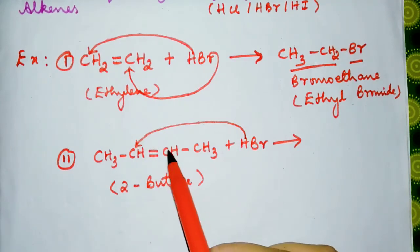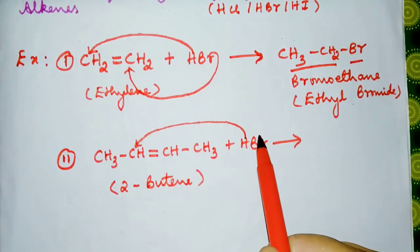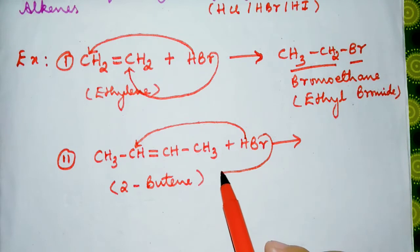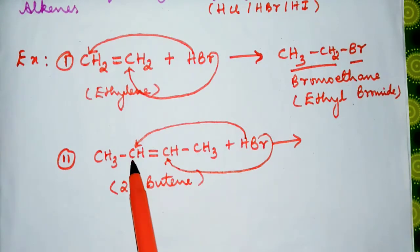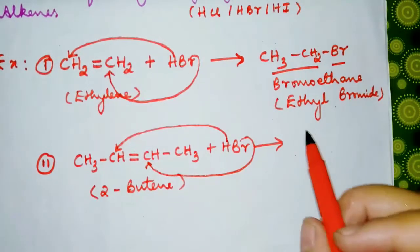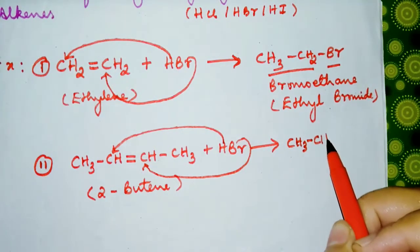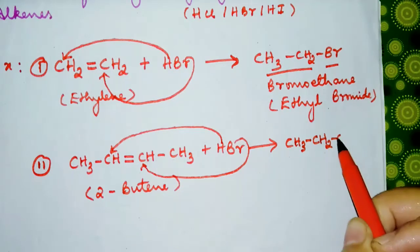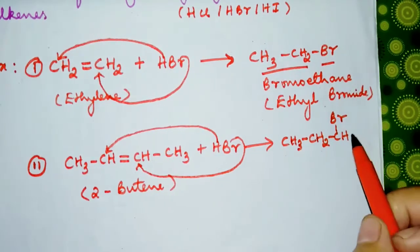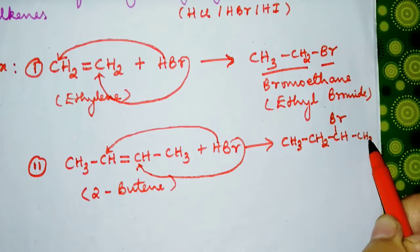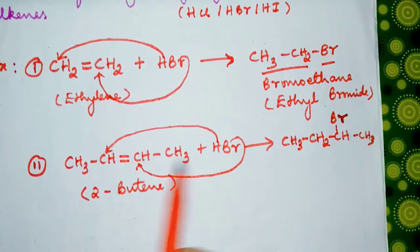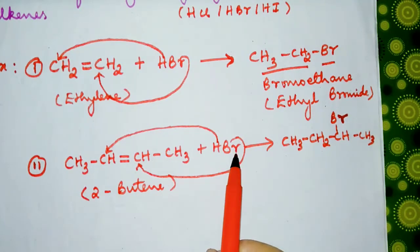In the case of symmetrical alkenes, this hydrogen can attack this carbon or this one, and the bromide ion can attack this one or this one. So you get CH3-CH2-CHBr-CH3 when your hydrogen attacks this one and Br attacks this one.